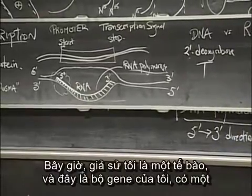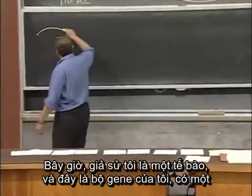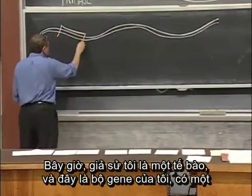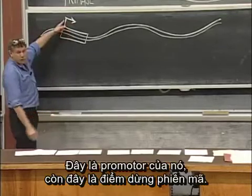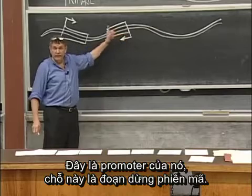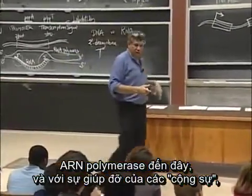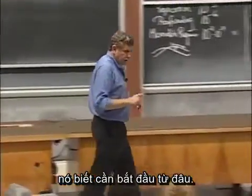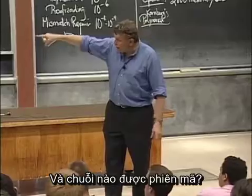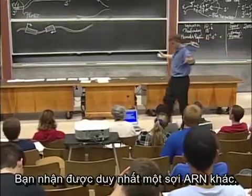So we get RNA polymerase. When I am a cell and this is my genome, I have a gene that goes this way — here's its promoter, here's its transcriptional stop. I could also have a gene that goes this way — here's its promoter, here's its transcriptional stop. Directionality could go in either direction. RNA polymerase comes along and, with the help of friends, knows where to start. Those friends could be other proteins sitting down there that RNA polymerase likes to associate with. Which strand is being transcribed — the bottom strand or the top strand — matters. You get a different single-stranded RNA.